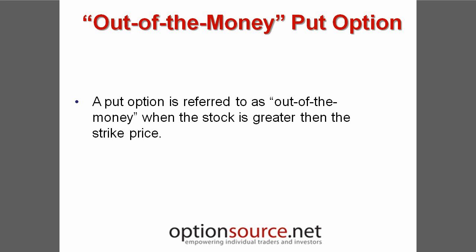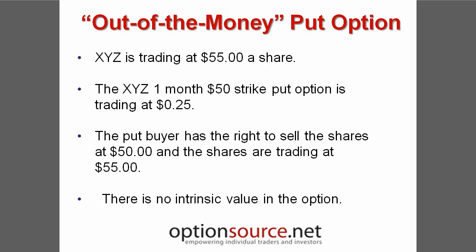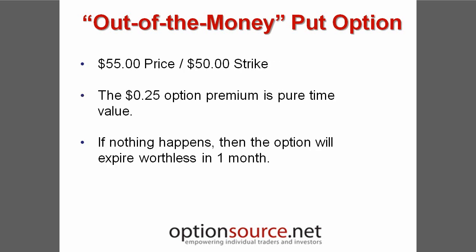A put option is considered to be out of the money when the share value of the underlying security is greater than the strike price. With XYZ trading at $55 per share, the XYZ one-month put option with a $50 strike price might be trading at $0.25. In this case, the put buyer has the right to sell XYZ shares at $50. However, since the shares are still trading at $55, the put option has no intrinsic value. With the share value priced at $55 and a $50 strike, the $0.25 put option premium is made up entirely of time value. If the share value remains above $50, the put option will expire worthless.